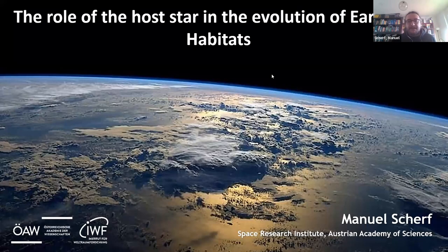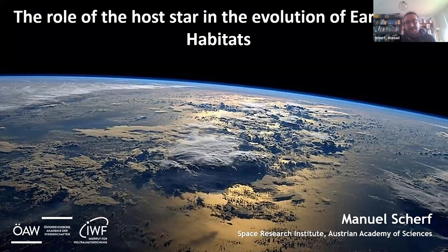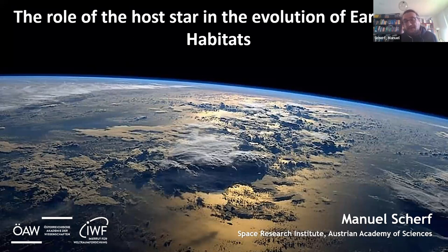This talk is basically a continuation of Professor Helen Lammer's talk two weeks ago, but will focus more on the late evolution of terrestrial planets, giving focus on the role of the host star on the evolution of Earth-like atmospheres and Earth-like habitats. It will also briefly discuss the role of the galaxy in the prevalence of Earth-like habitats and further parameters affecting evolution, including problems around M-dwarfs.